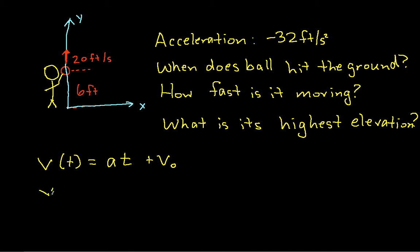The position, which we'll call y here because we're talking about things going up and down vertically, is one-half at squared plus V0, t plus y0, where y0 is the initial velocity, I'm sorry, the initial position, or the initial height in this case. And this is obtained by integrating the velocity.